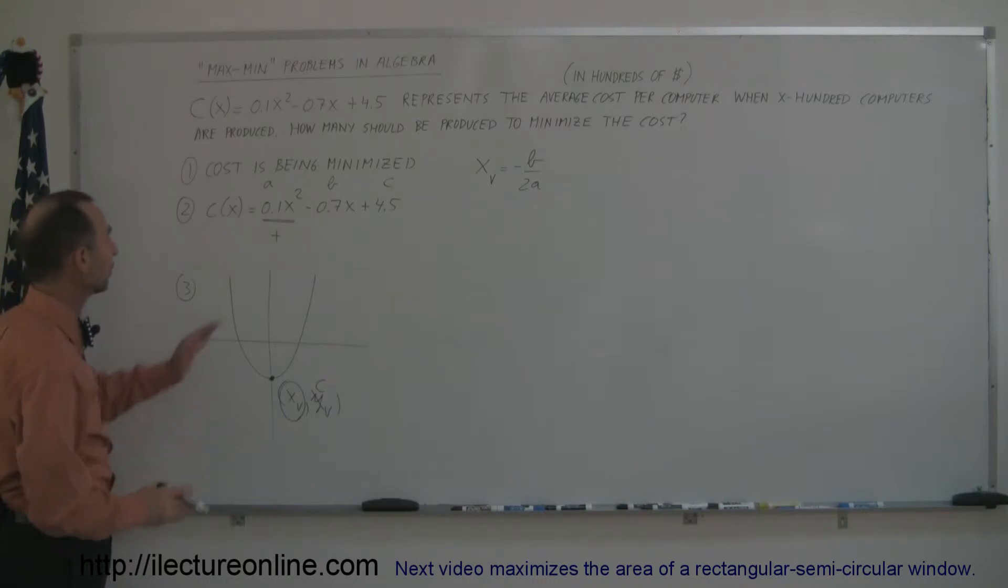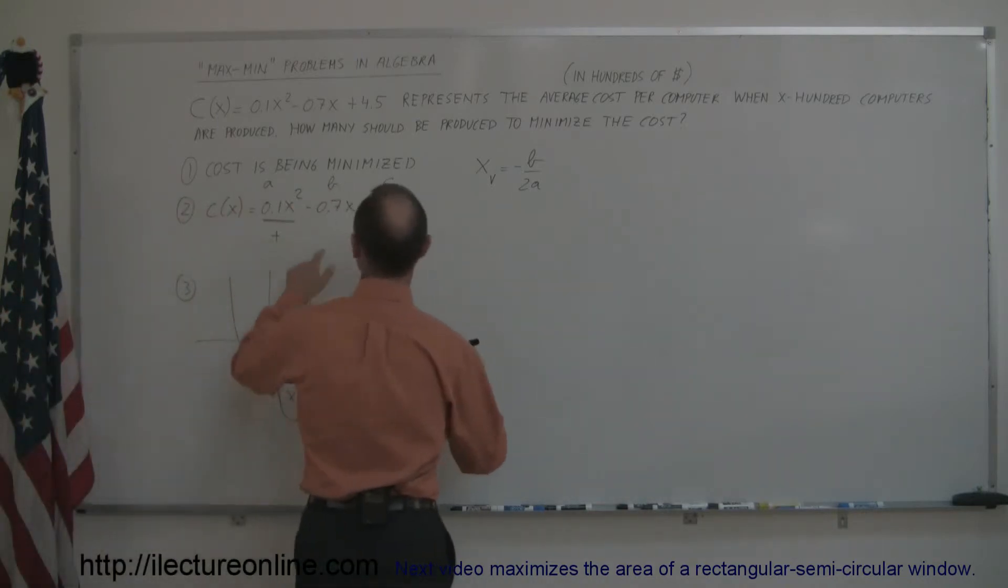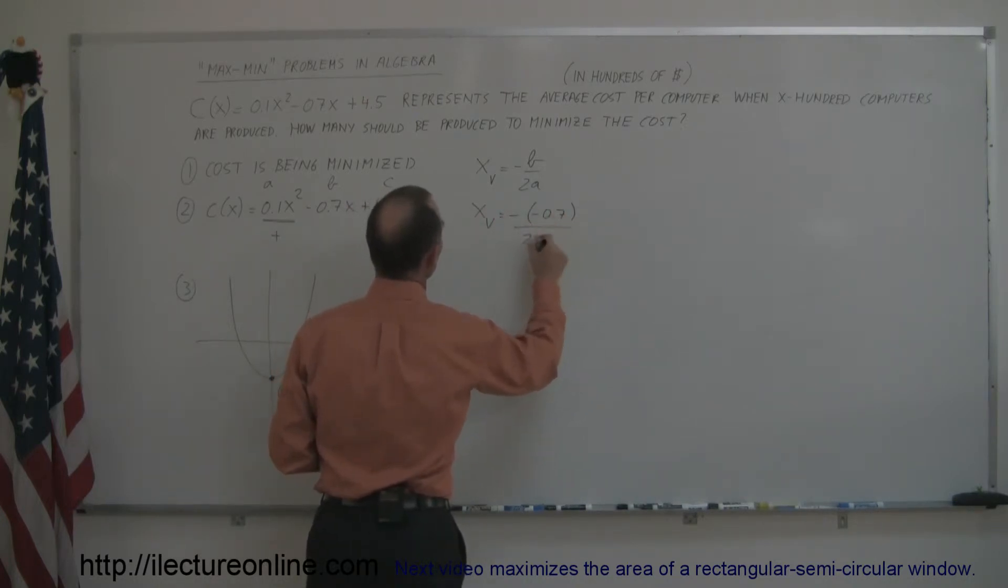Now plugging in what a and b are equal to, a is equal to 0.1, b is equal to minus 0.7, so x sub v is equal to minus times a minus 0.7, divided by 2 times a, which is 0.1. So x sub v is equal to 0.7 over 0.2, and so x sub v is equal to 3.5.